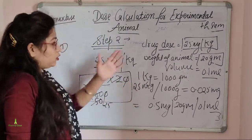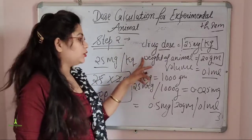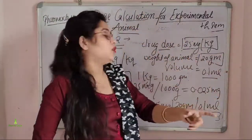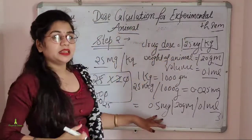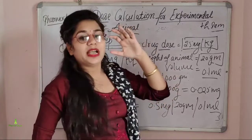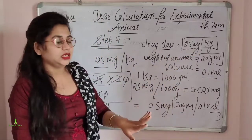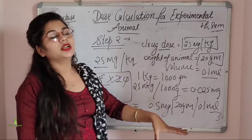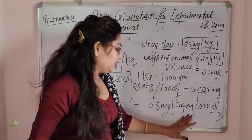Now, what did I say? The first step was the given data. We had the dose in mg/kg and the animal weight in grams. The method is very easy: divide by 1000 and multiply by the weight of the animal. So 0.5 mg of drug in 0.1 mL for a 20 g animal. The next step — the third step — is the weighing and dilution of drugs.